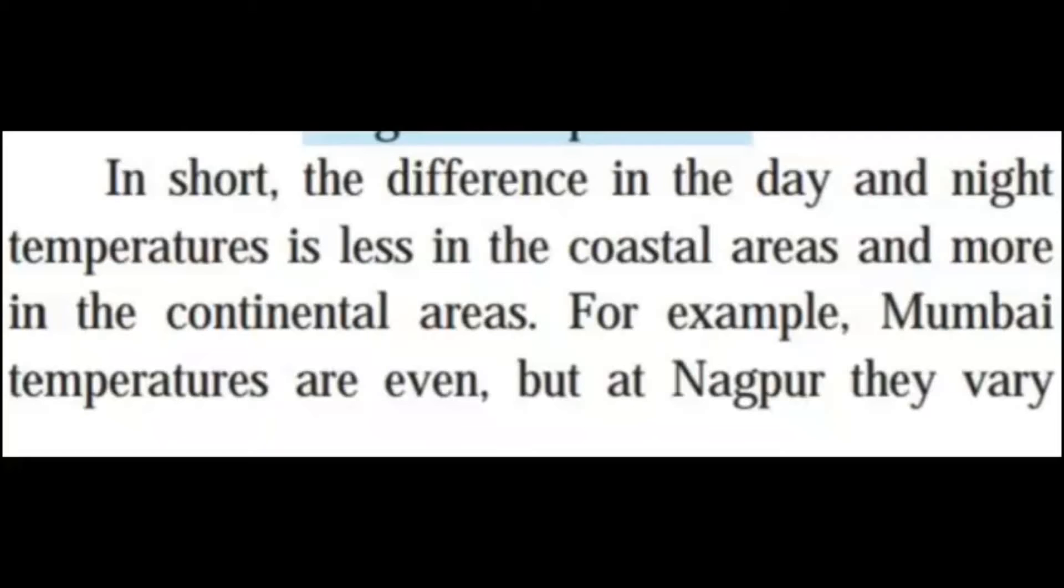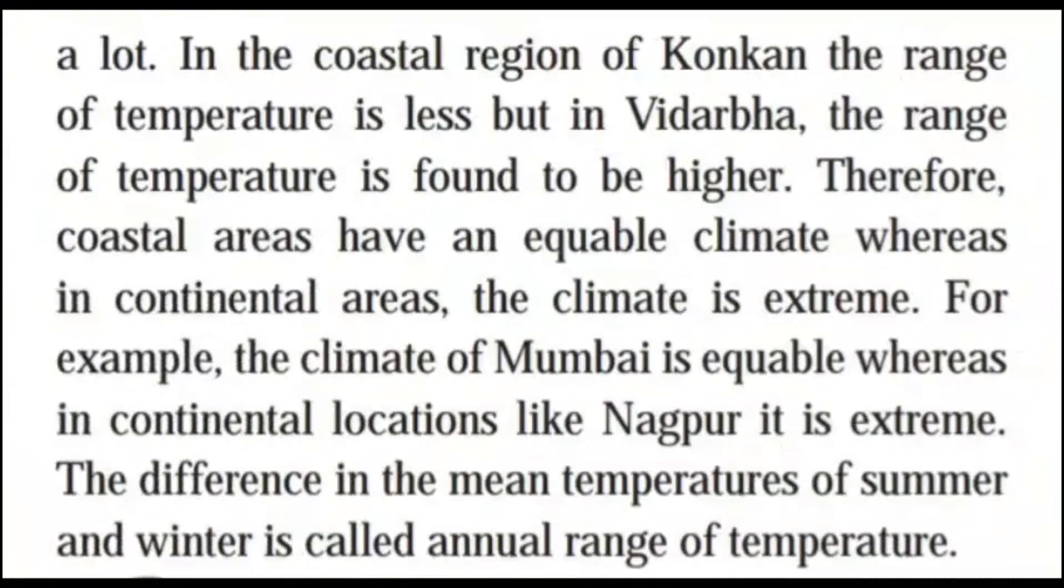In short, the difference in the day and night temperatures is less in the coastal areas and more in the continental areas. For example, Mumbai temperatures are even, but at Nagpur, they vary a lot. In the coastal region of Kokan, the range of temperature is less, but in Vidharba, the range of temperature is found to be higher. Therefore, coastal areas have an equable climate whereas in continental areas, the climate is extreme. For example, the climate of Mumbai is equable whereas in continental locations like Nagpur, it is extreme.